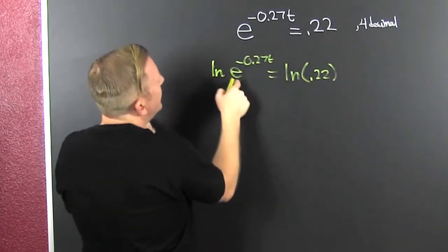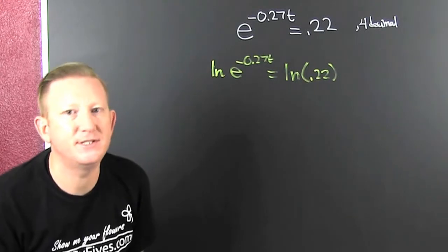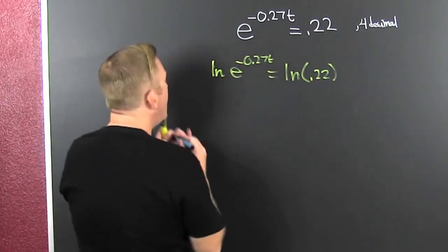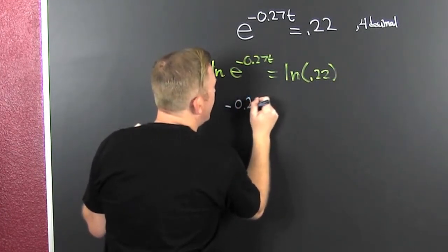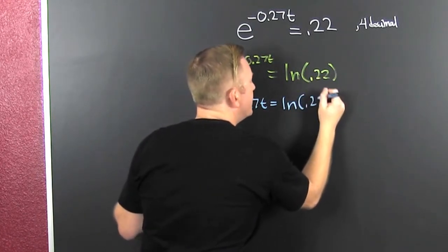So then the natural log cancels out the e. Well, it doesn't cancel out the e - it's a property of logarithms. So then it goes away. We're here to stay. That's minus 0.27t, equal to the natural log of 0.22.